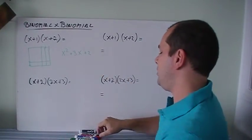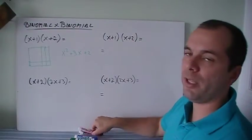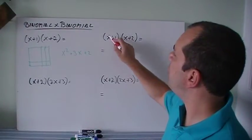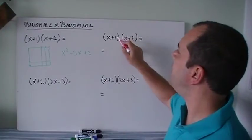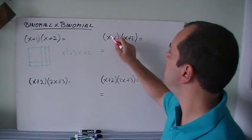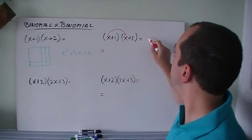Okay. How do we do this in algebra with the little arrows? So I'm going to change colors. I'm going to do the x times both of them, and then the 1 times both of them, and see what happens. So x times x is x squared.